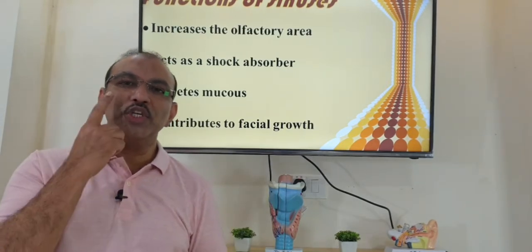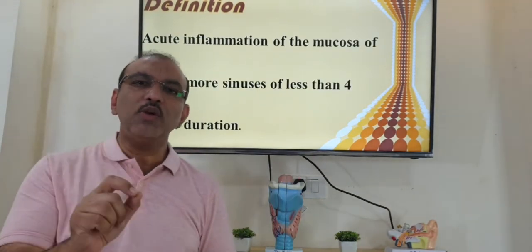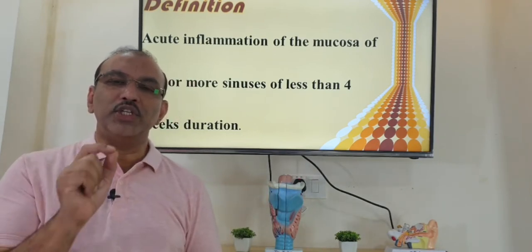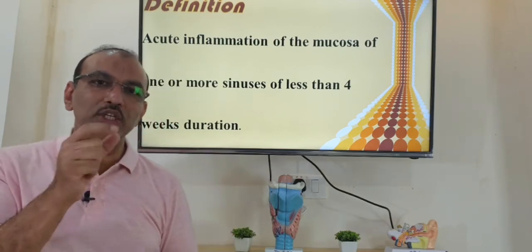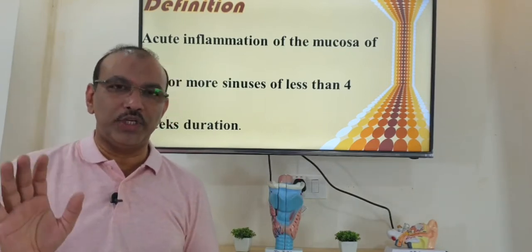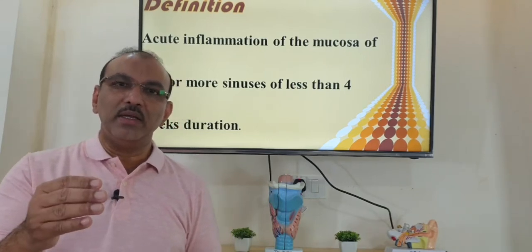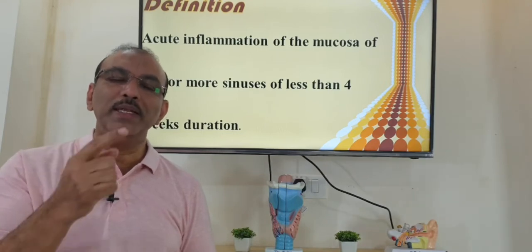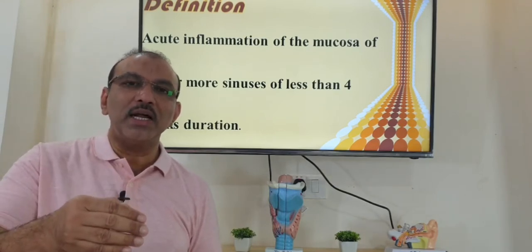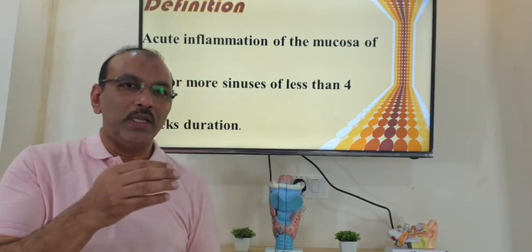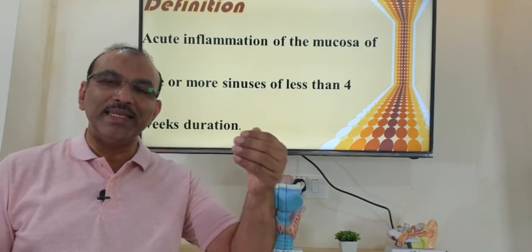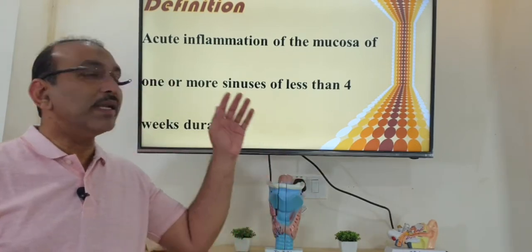Sinusitis means infection of the sinuses. To start with, there will always be an upper respiratory infection, and that is viral. The upper respiratory infection involves mainly the nose, which is called acute rhinitis — it is viral and usually lasts for three to five days. If symptoms persist beyond seven to ten days, the infection has spread from the nose to the sinuses. We suspect sinusitis when fever, nasal block, or nasal discharge does not go off after seven to ten days but resolves within one month — that is acute sinusitis.